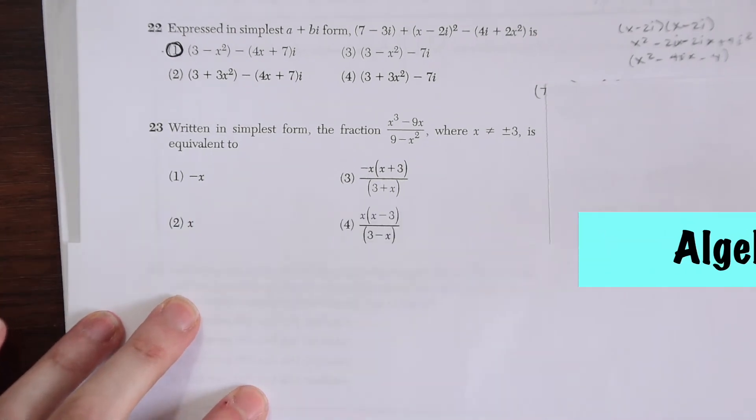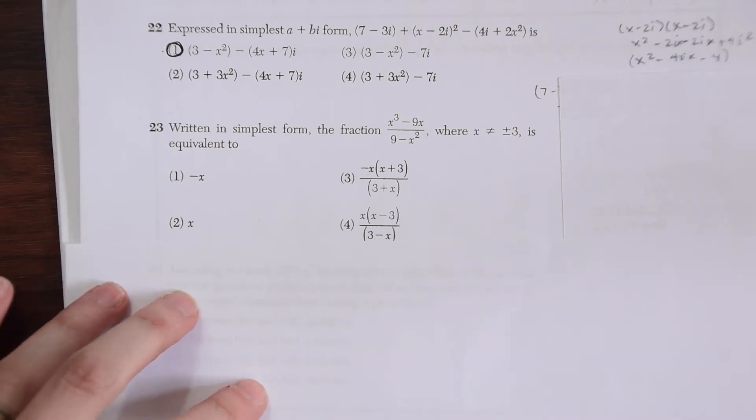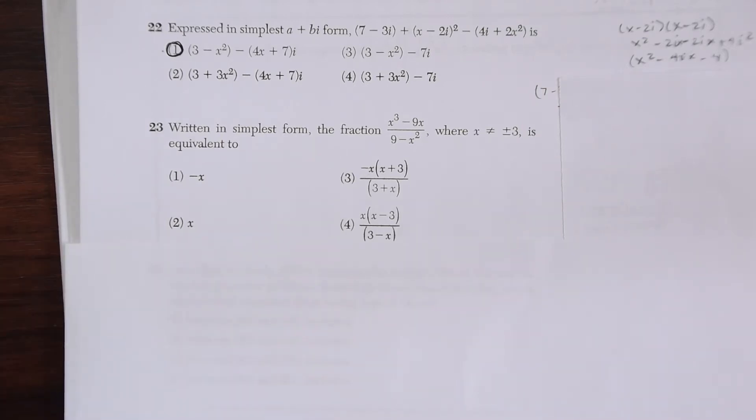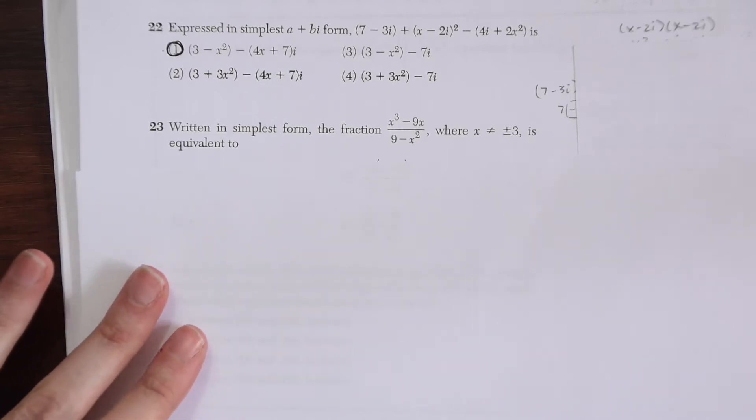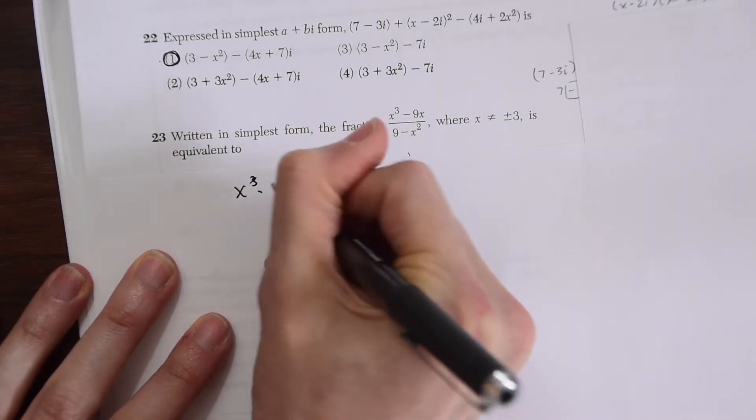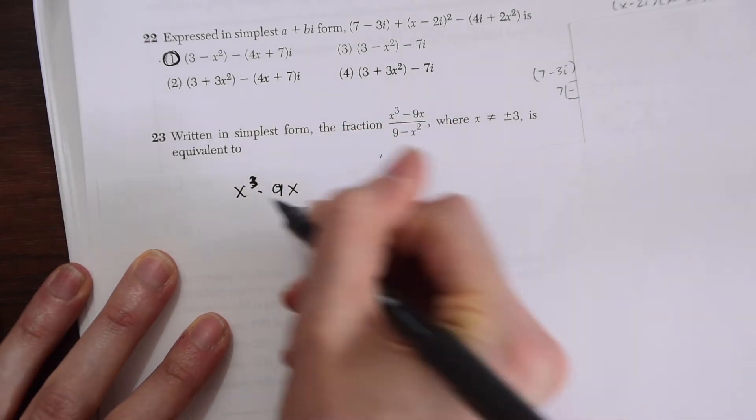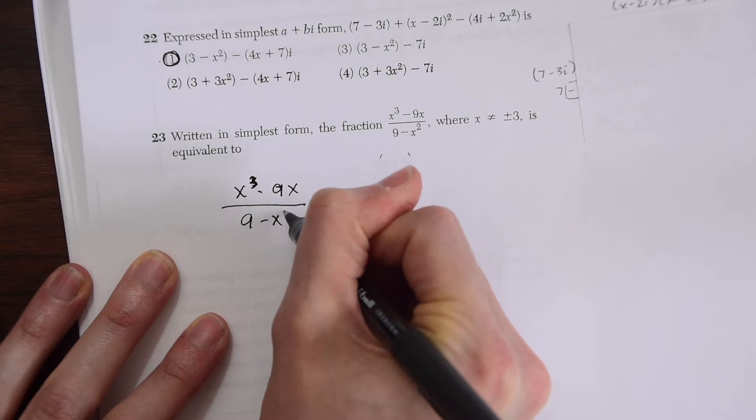For question 23 we have written in simplest form the fraction x cubed minus 9x over 9 minus x squared where x does not equal plus or minus 3 is equivalent to, so we have to simplify this. Let's write it over here so we can work with it.